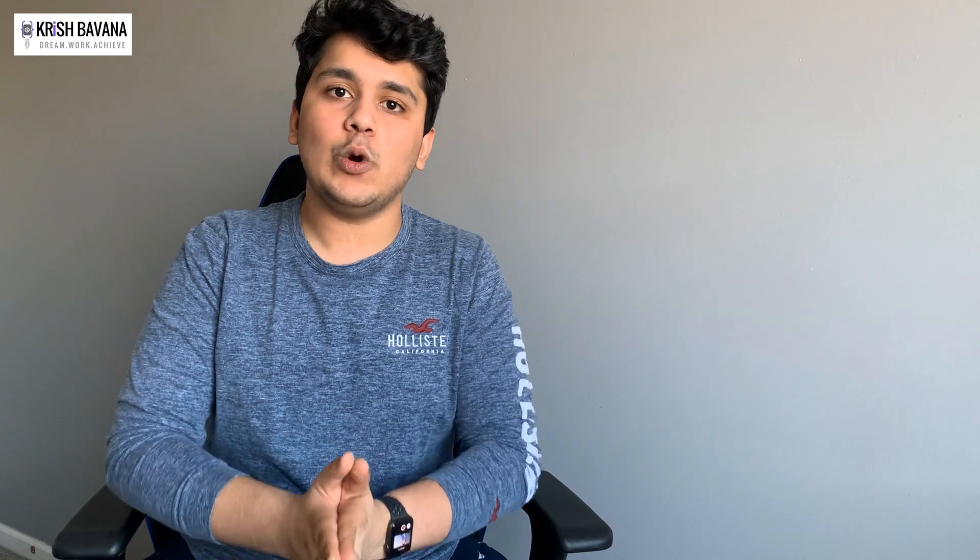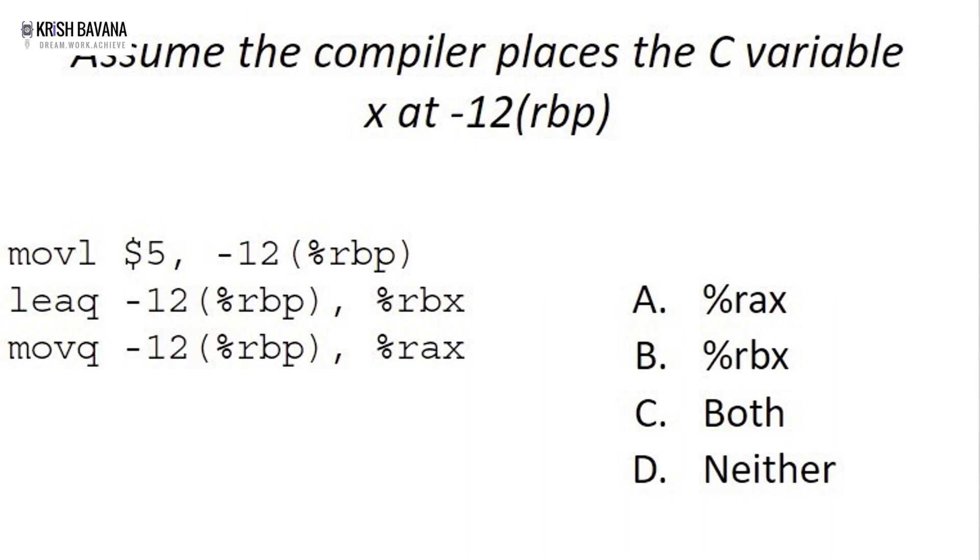There are 14 general purpose registers in the assembly language we're talking about. For example, if we have RBX which holds an integer, it holds the actual data. Or if we have a pointer at RBX, it actually holds the address of where the actual data is. That's how we declare pointers in assembly language.